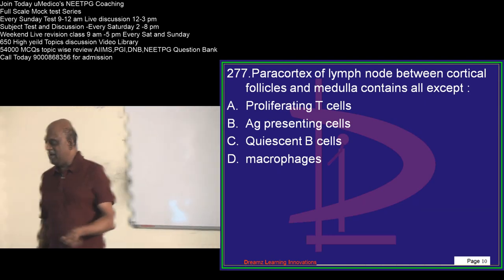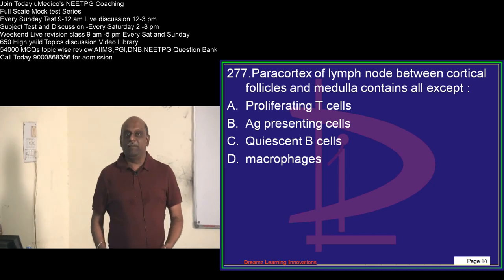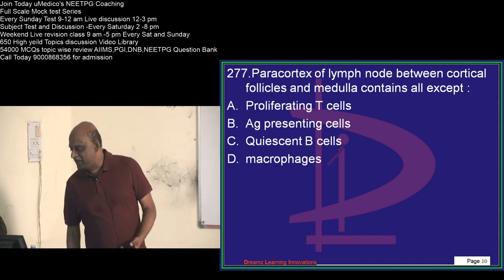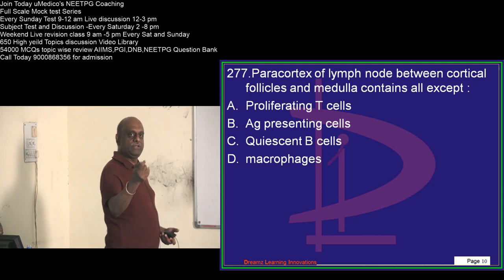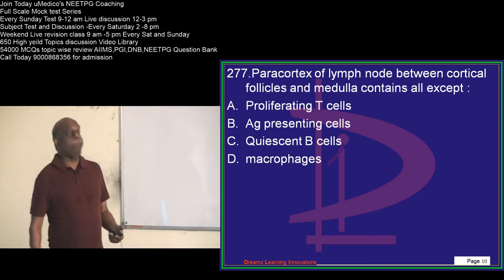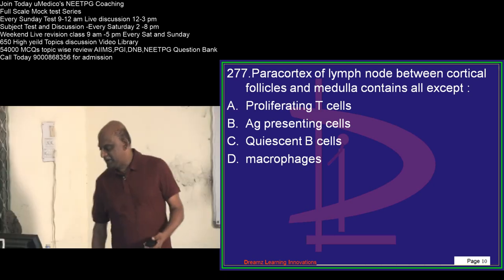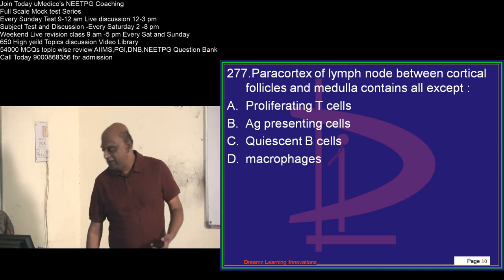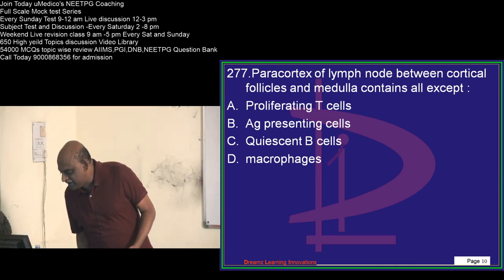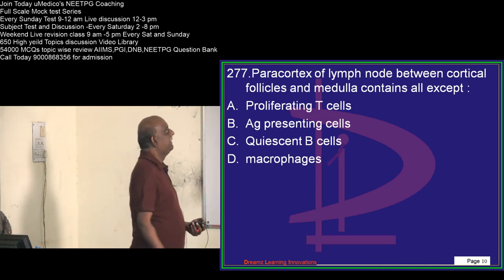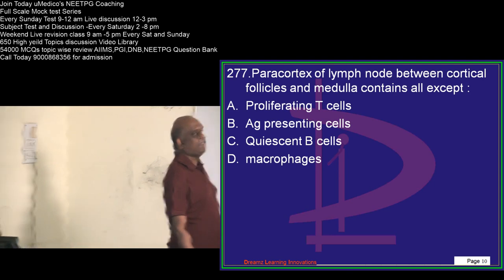This is the challenging question. I want to see the number of online viewers shoot to 500 plus — call your friends, pass on the link to them. Paracortex of the lymph node — come on. Priyanka is proposing antigen-presenting cells. Shivam Sharma also. Saptarshi Das is proposing quiescent B cells.